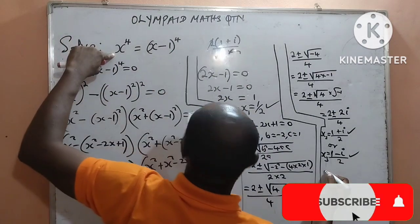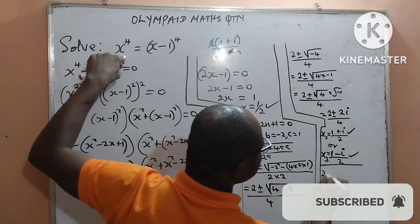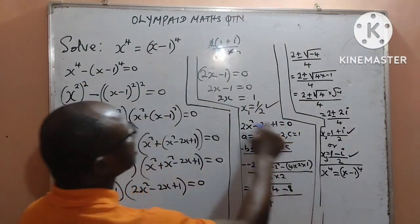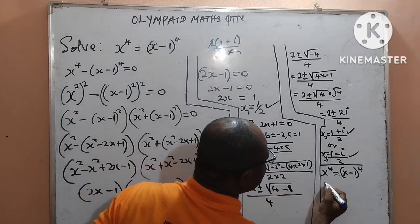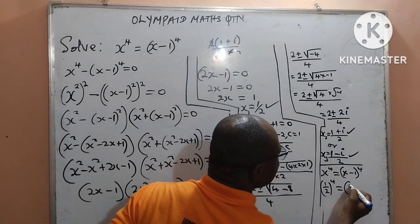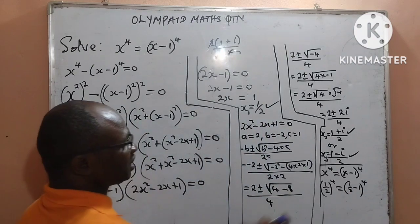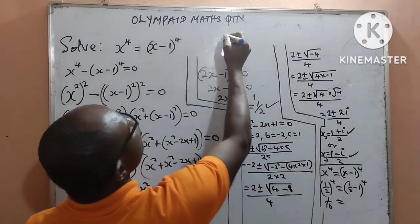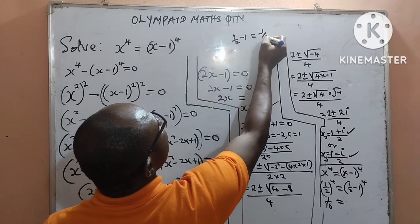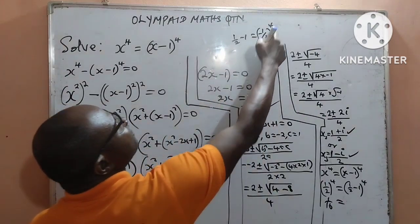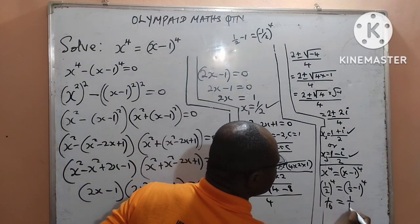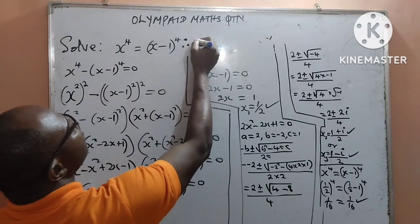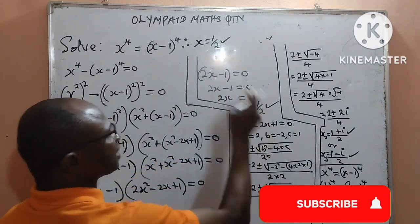Let us use the first real answer to verify. From the original equation, x to the power of 4 equals x minus 1, all to the power of 4. Substituting x equals 1 over 2: the left-hand side gives 1 over 2 to the power of 4, which is 1 over 16. On the right-hand side, 1 over 2 minus 1 is negative 1 over 2, and raising a negative number to an even power gives positive, so it also gives 1 over 16. This authenticates our answer.